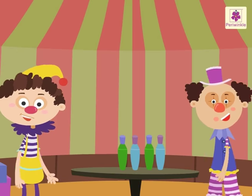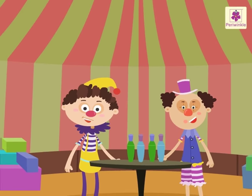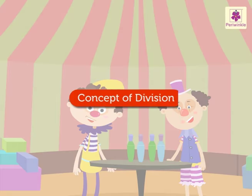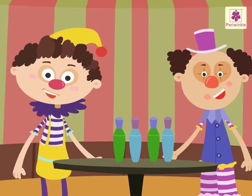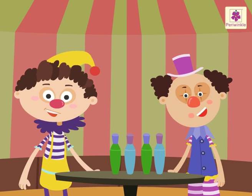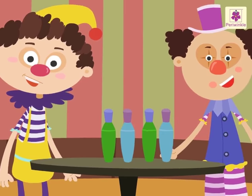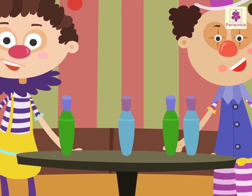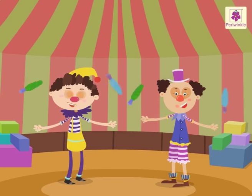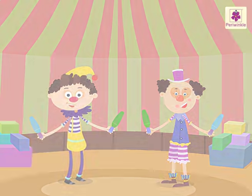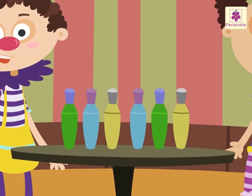Hey friends, guess who has come to meet us today — Jumbo and Jimbo the clowns! Let us understand the concept of division with them. To begin, we will distribute four bottles equally between Jumbo and Jimbo. How many will each one get? One, two — one, two. Each one of them got two bottles.